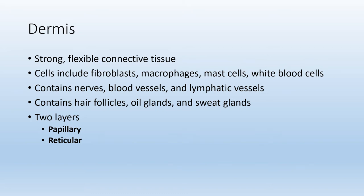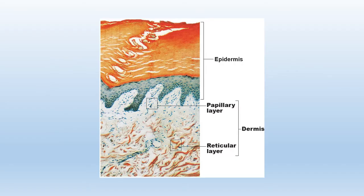Within the dermis, we have two layers. The papillary layer is more superficial. Papillary means finger-like projection or bump, and we will see that layer look like fingers projecting up into the epidermis. Deep to the papillary layer of the dermis, we find the reticular layer. On this slide, you are able to identify the two layers of the dermis — the papillary layer with finger-like projections up into the epidermis, followed by the reticular layer.